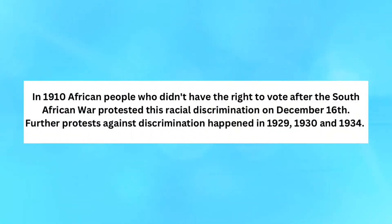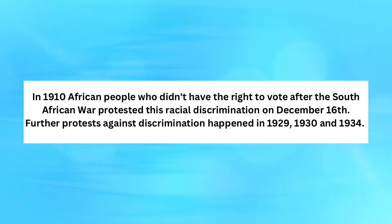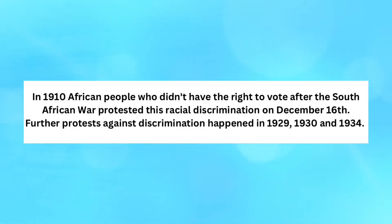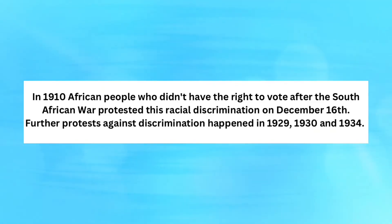In 1910, African people who didn't have the right to vote after the South African war protested this racial discrimination on December 16th. Further protests against discrimination happened in 1929, 1930, and 1934.